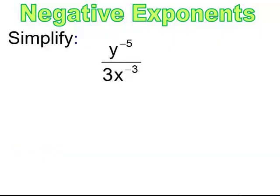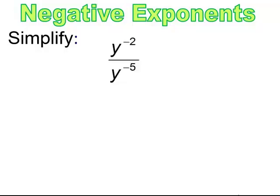Pause and try. The x to the 3rd goes up top, the 3 stays on the bottom, and the y to the 5th goes on the bottom. Pause and try. When you switch it up, you end up with y to the 5th over y squared, and this simplifies to y to the 3rd.